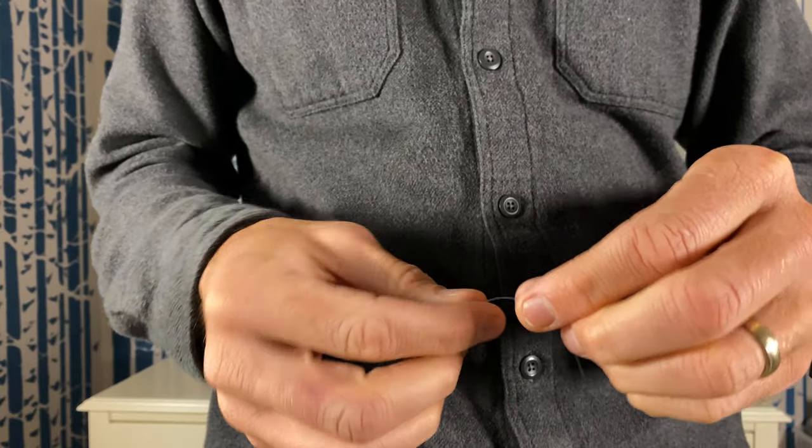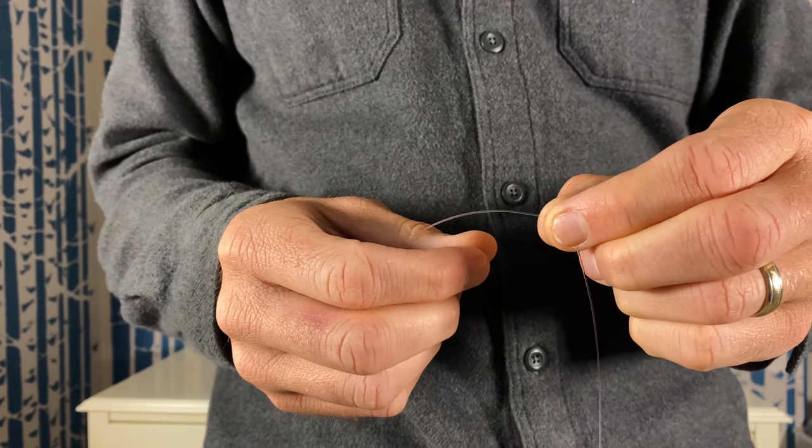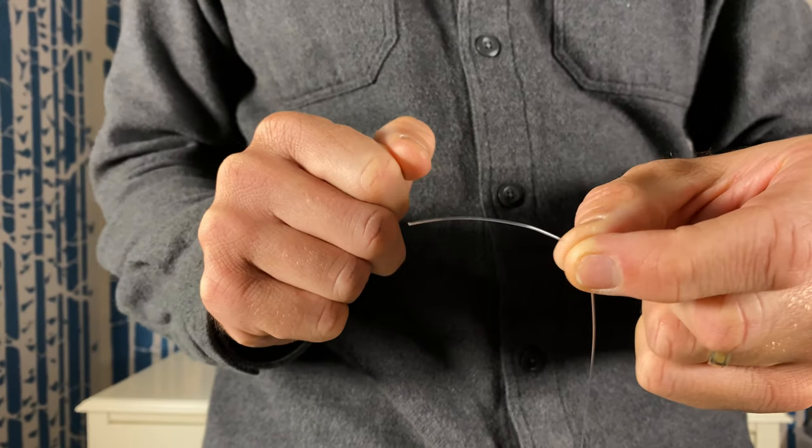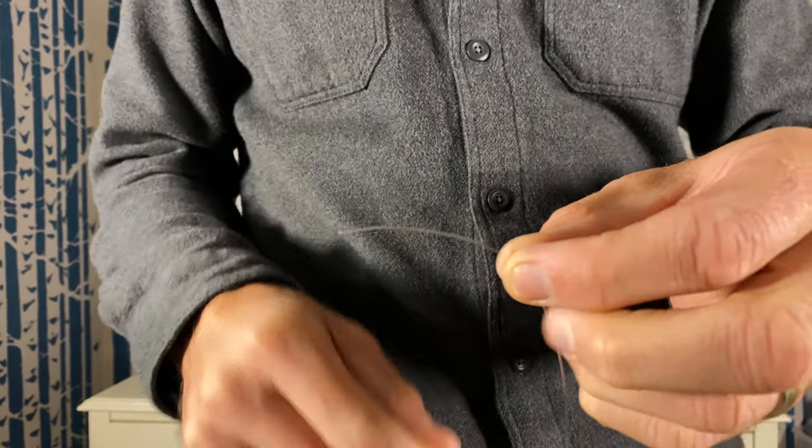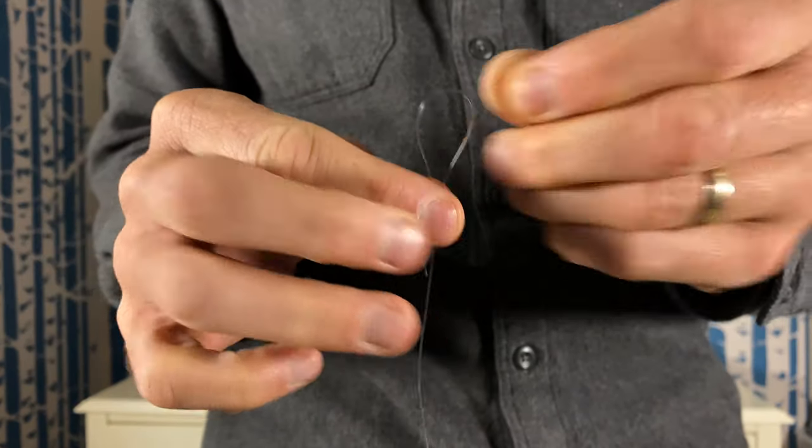Okay, for the first knot we are going to tie a double surgeons loop knot. What you do is you take your line and you're going to fold the line in half.